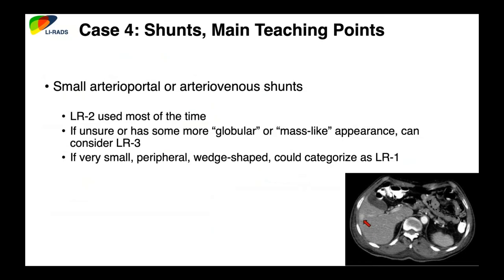The main teaching point for shunts is that most are small. Occasionally they can be geographic and large, but generally they're small and LR2 is appropriate for most. If you're uncertain, call it LR3. LR2 patients may go back to ultrasound, where the shunt won't be visible since it's not a real lesion. LR3 patients will likely be followed with CT or MRI.